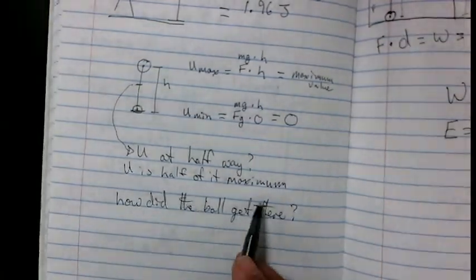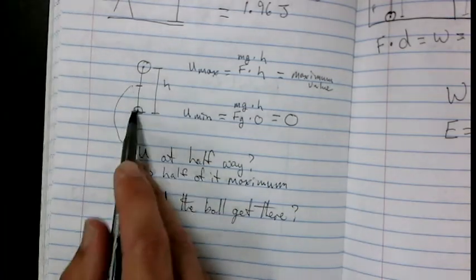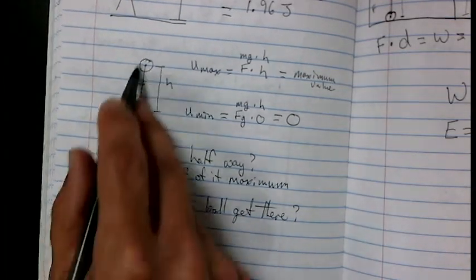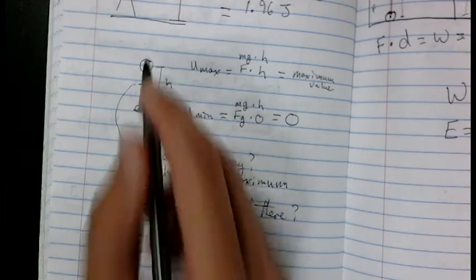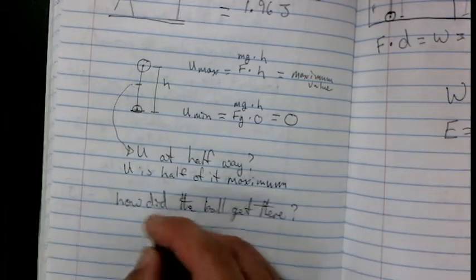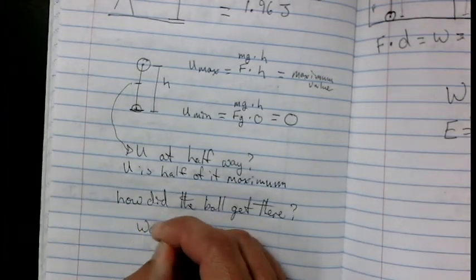So how did the ball or the object get up to the top? How did it go from down here all the way up? How did we get it to have potential energy? Work was done.